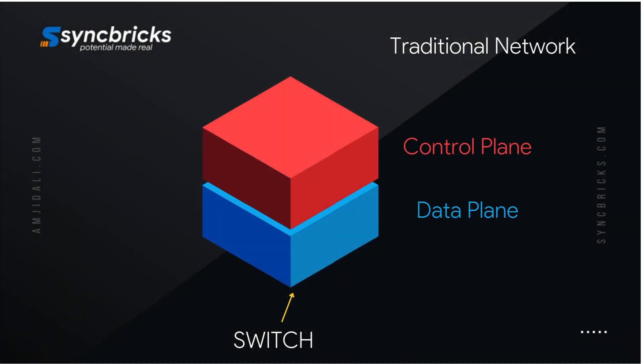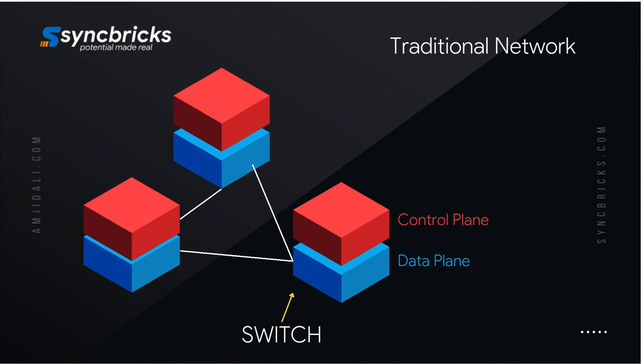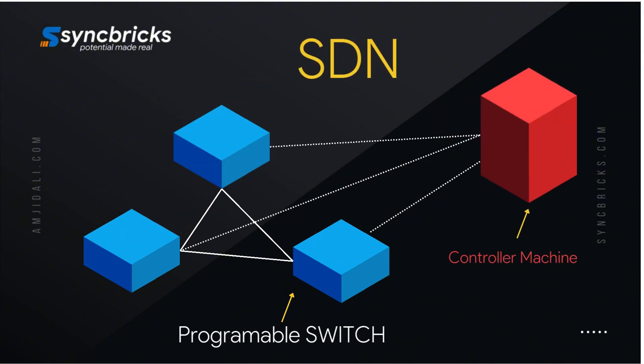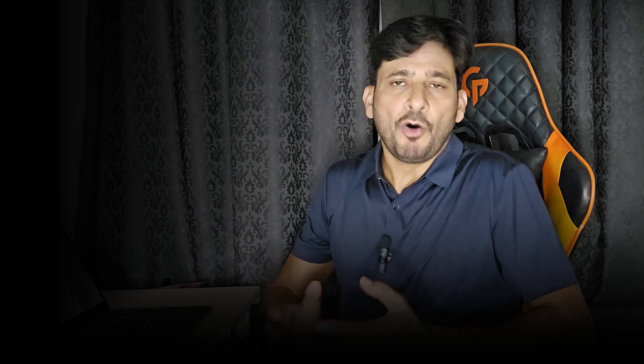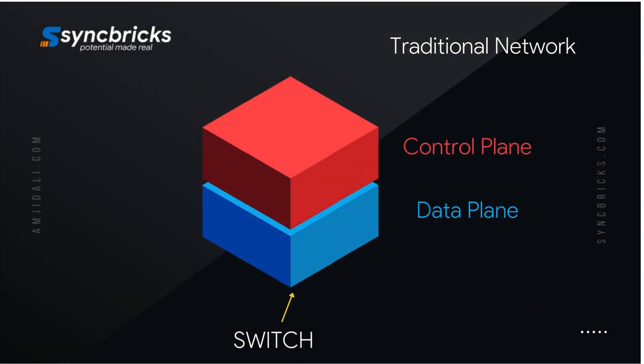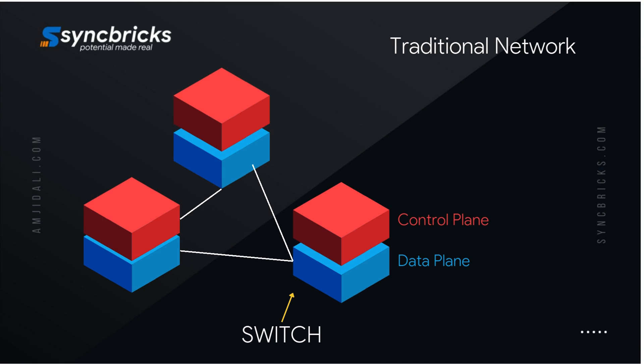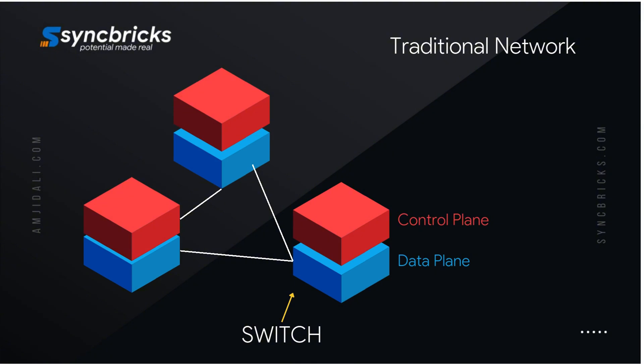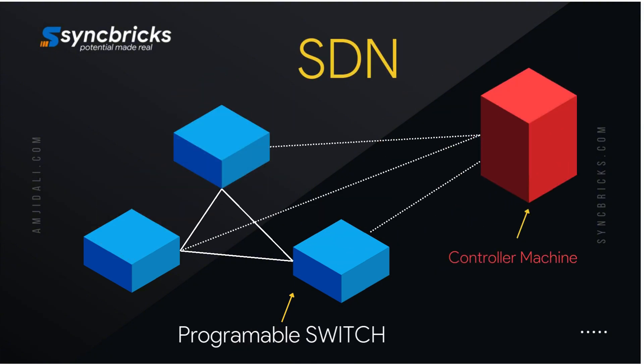SDN is an innovative approach to networking that separates the control plane — the decision making part of the network — from the data plane, which handles the data forwarding. Traditionally these functions were tightly integrated into hardware devices like routers and switches. SDN breaks this dependency, moving the control plane, the brain of the network, to a centralized software controller, allowing network administrators to manage the entire network via software, making it more agile and programmable.